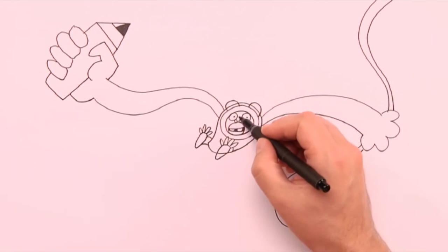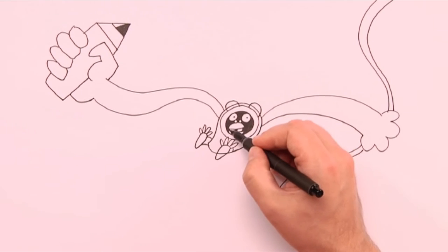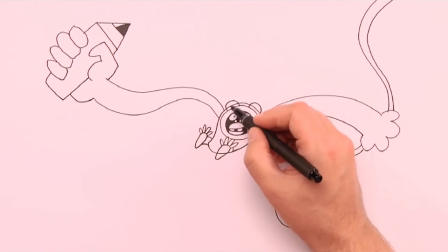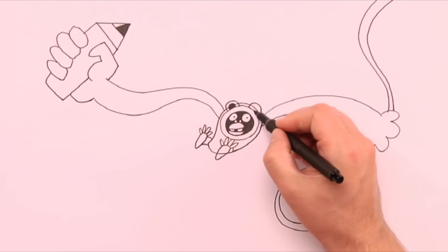And now we are ready to color it up. First, we use the black marker and color the head black. Then a bit on the ears.